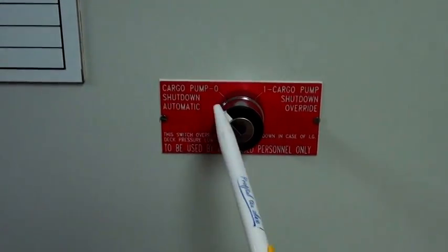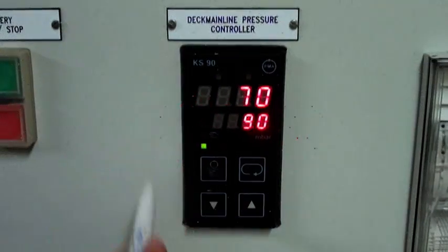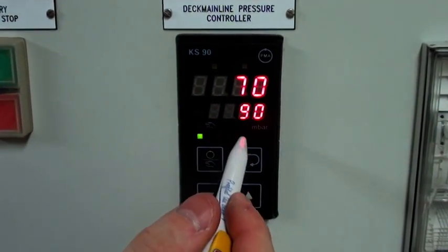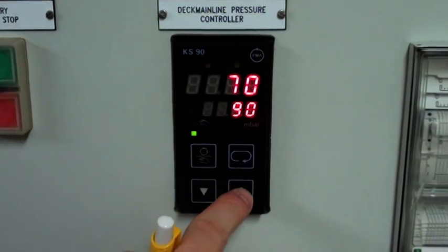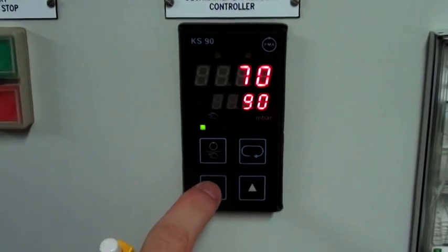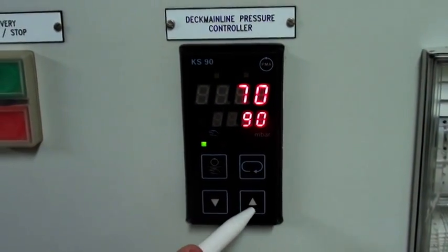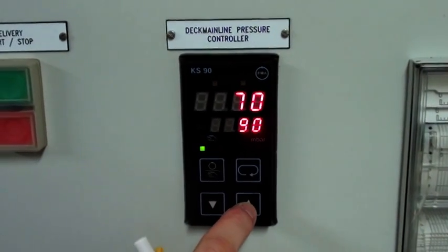Usually it should be set on automatic shutdown. To change the set point of the inert gas pressure on deck, you can use the arrows up and down. The longer you push the arrow, the more the value will change.